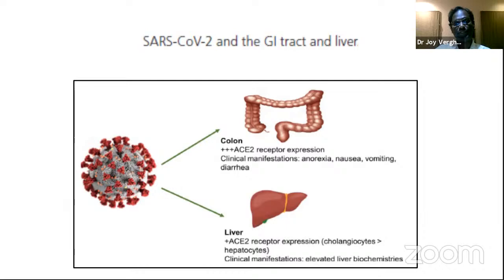The ACE2 receptor is present in the colonic mucosa and in the liver — both cholangiocytes and hepatocytes. So once the viral particle attaches not only in the respiratory system but also in the colonic or liver hepatocytes, there will be organ-specific manifestations: anorexia, nausea, vomiting, and diarrhea. In the liver, it will cause a rise in liver enzymes, which is why liver function tests in COVID-positive patients show abnormalities.